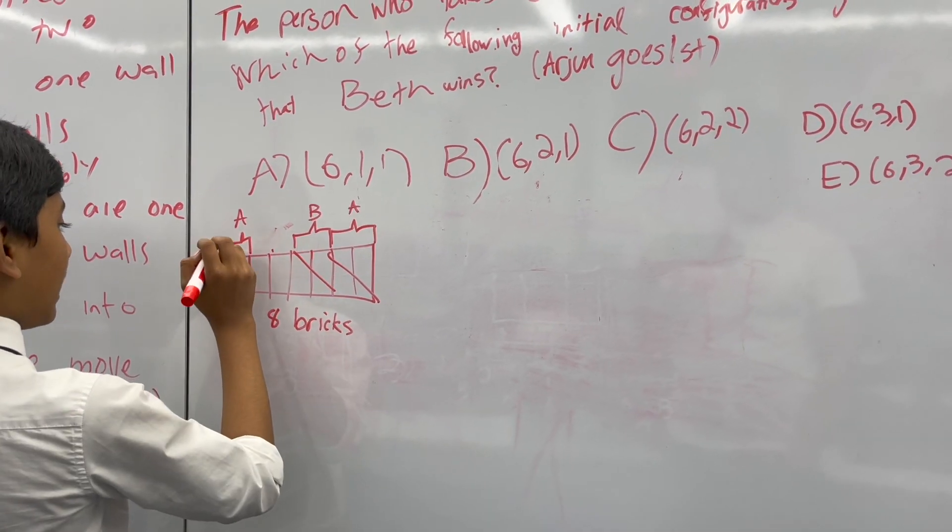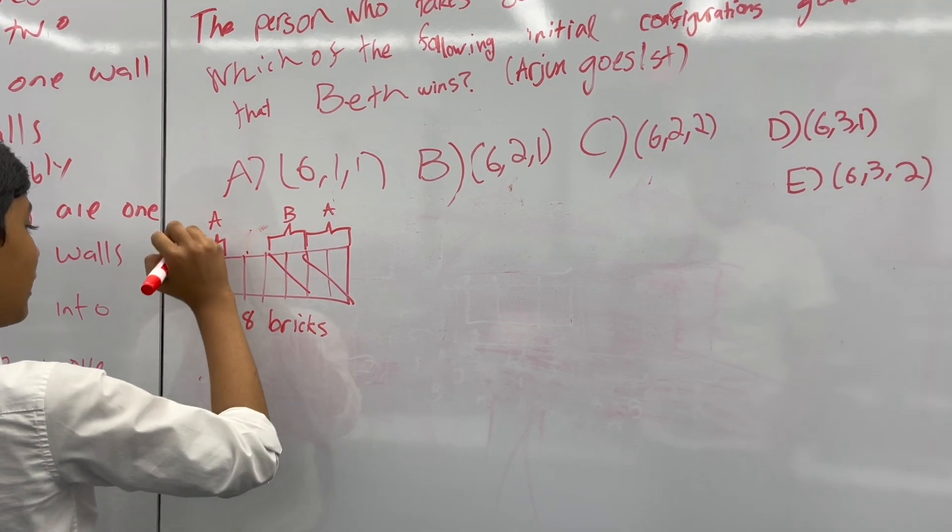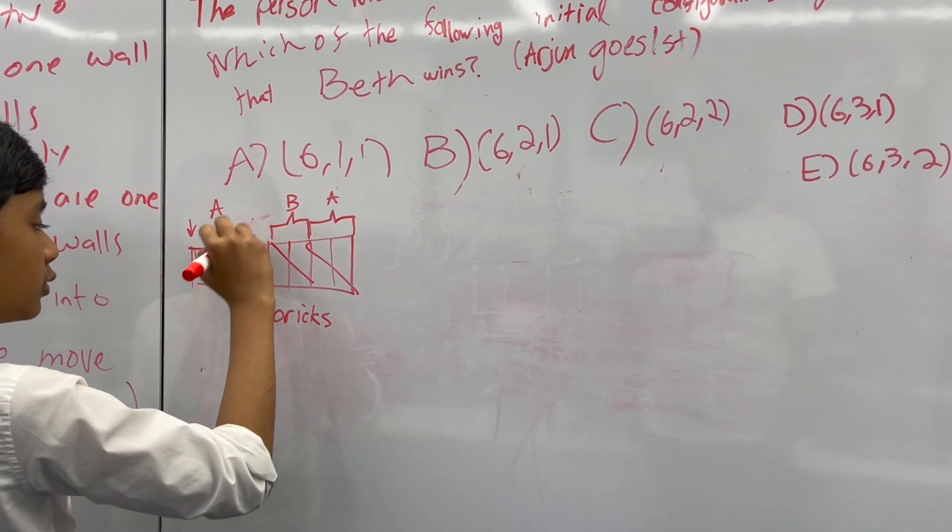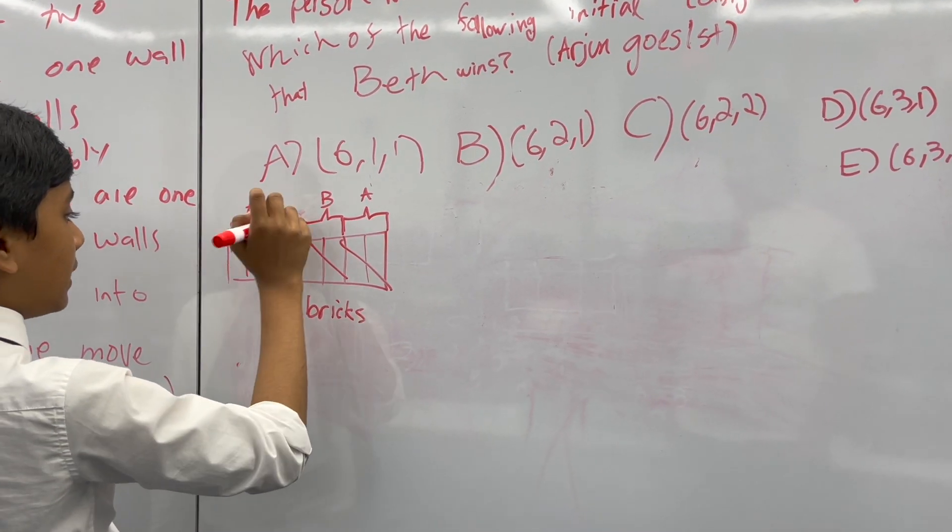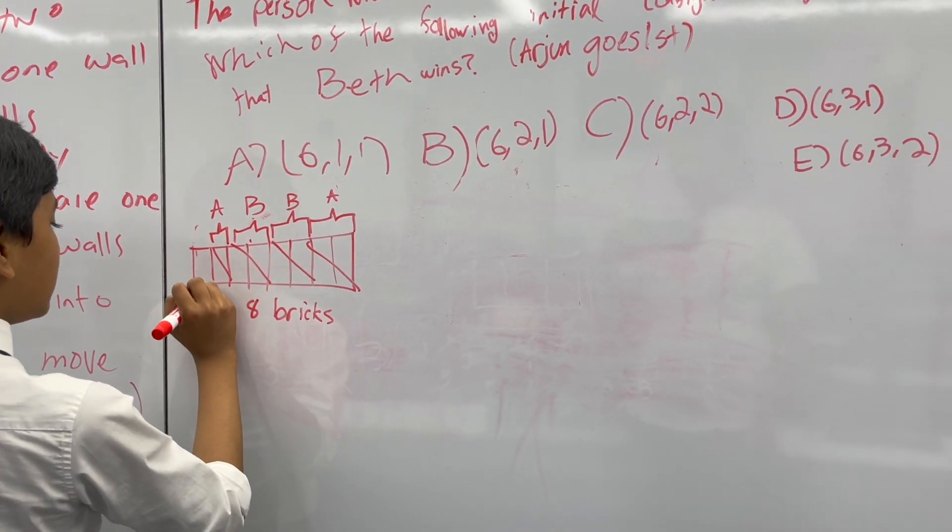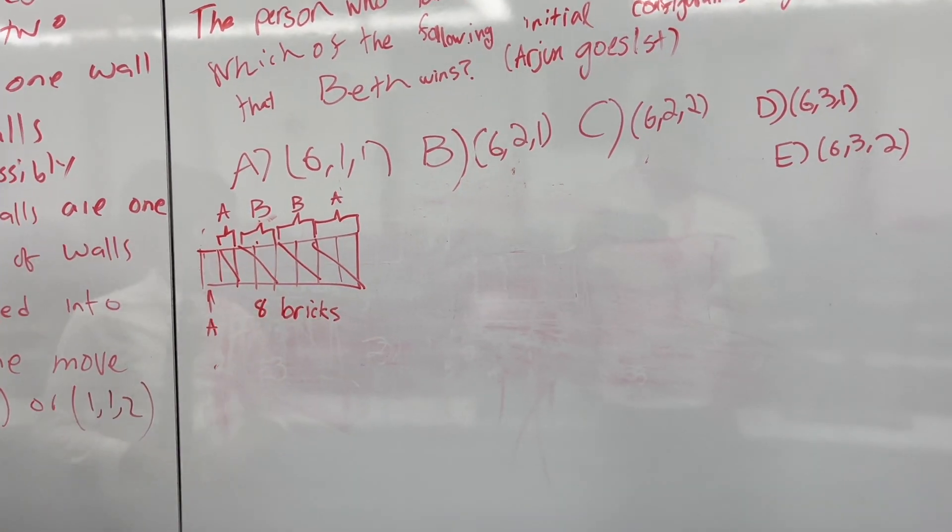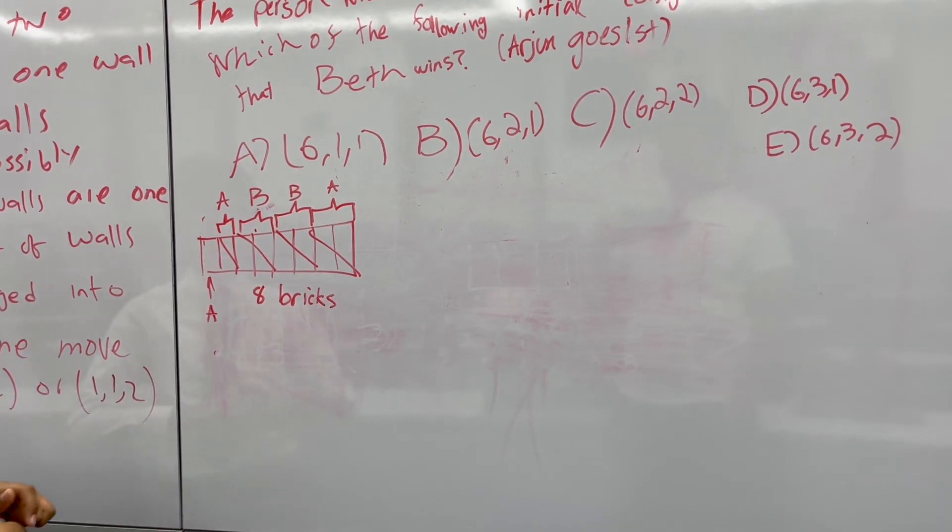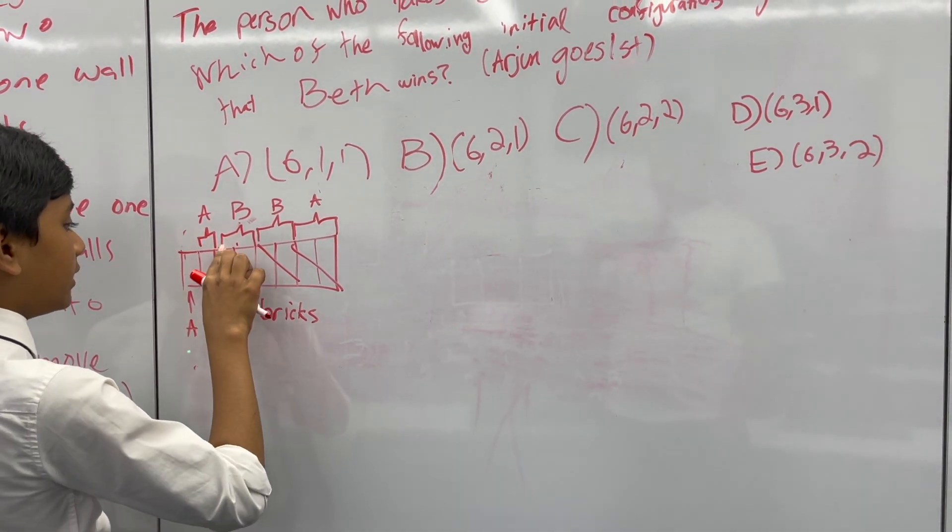Because that forces Beth to either take out this brick, which gives Arjun the win, or it forces Beth to take out these two bricks, which gives him the win, because he can take out this last brick. So with eight bricks, he can easily force a win. But what about nine?